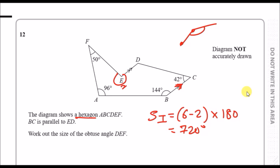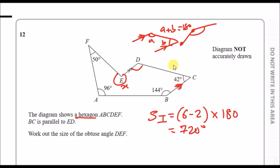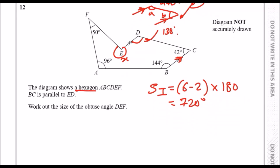We should know the angle at D since we're given everything we need. We have two parallel sides, which means the so-called allied angles should add up to 180: a plus b equals 180. So the angle at D plus the angle at C must equal 180. We have 42 already, so subtract 42 from 180 and you get 138. So all the interior angles — 50, 96, 144, 42, 138, and x — must sum to 720.